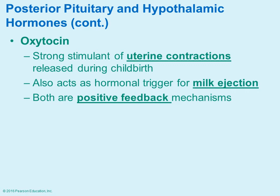Oxytocin is mainly associated with stimulating contractions of the uterus and is released during childbirth, responding to positive feedback. It is released, starts uterine contractions, those contractions stimulate additional oxytocin release, which triggers even stronger contractions, which continue to stimulate even more oxytocin. Positive feedback means the response keeps increasing until childbirth actually occurs.